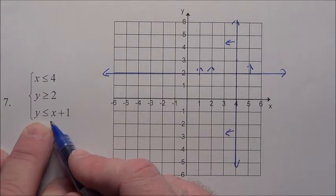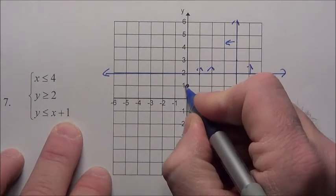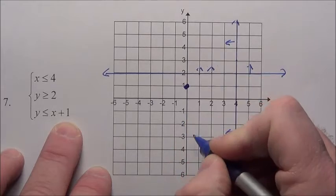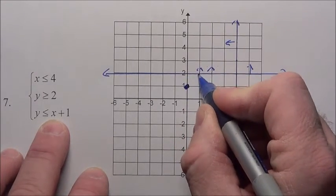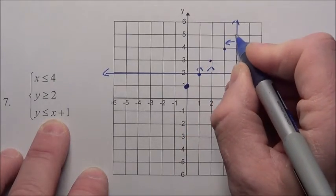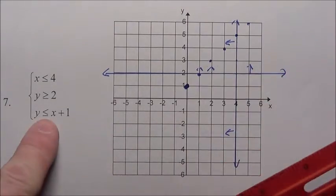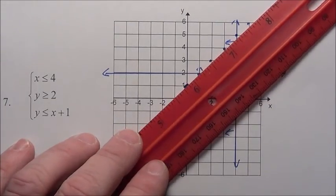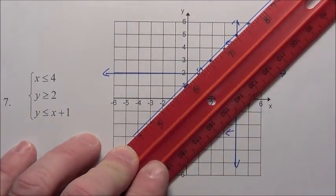It wants you to graph also it needs y to be less than or equal to x plus 1. So I have got to look at what that line looks like. That has a y intercept at 1 and has a slope of 1. So I will go up 1 to the right one, up 1 to the right one, and it goes to the right in that direction. So it does say or equal to, so it is a solid line. So I am going to draw a solid line here, right like that.